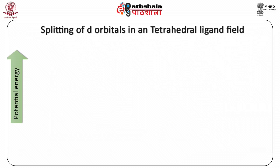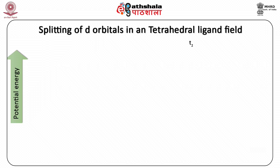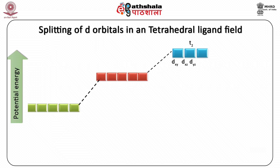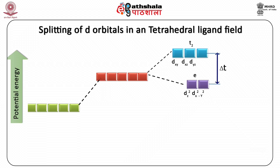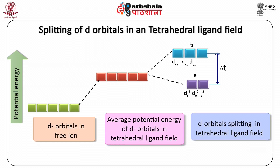We can see that the T2G set of DXY, DXZ, and DYZ orbitals is at a higher energy, and the EG set of DZ-squared and DX-squared minus Y-squared orbitals is at lower energy for a tetrahedral arrangement of ligands. The splitting of the energy levels of the d orbitals in a tetrahedral field is given by the tetrahedral splitting parameter, represented by delta T.